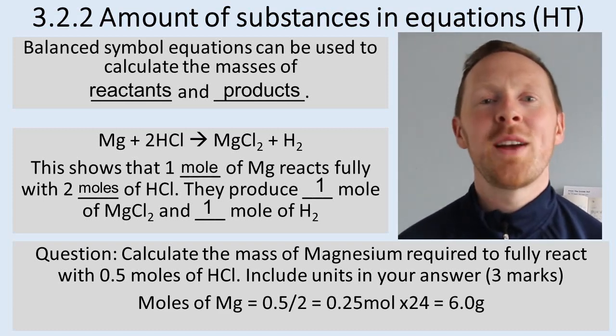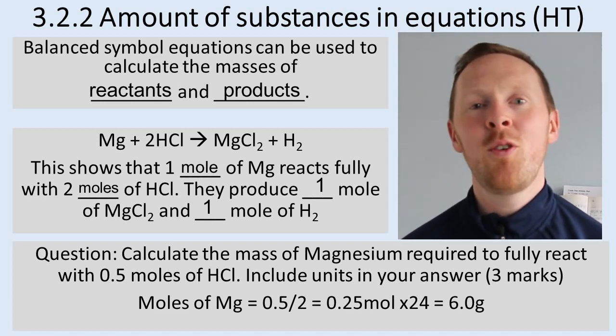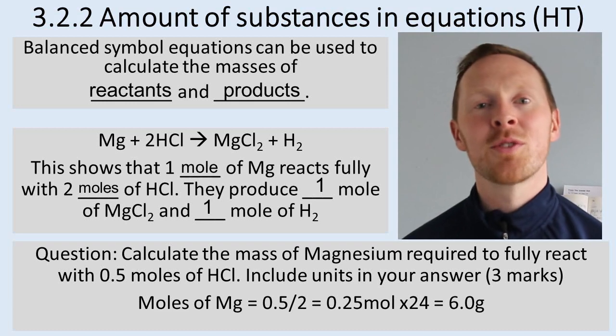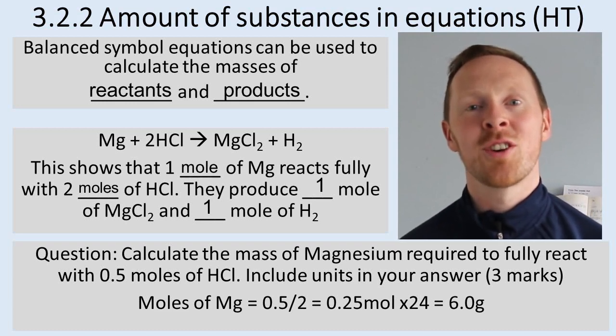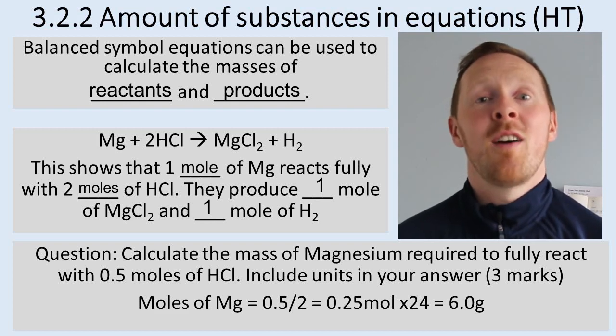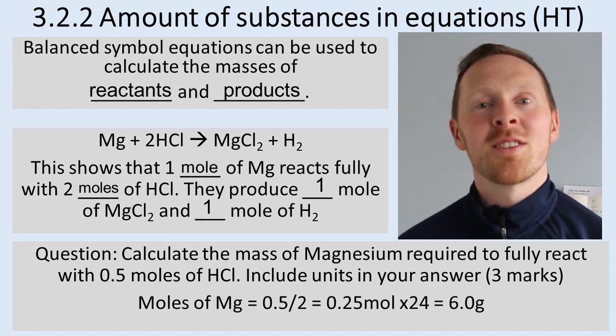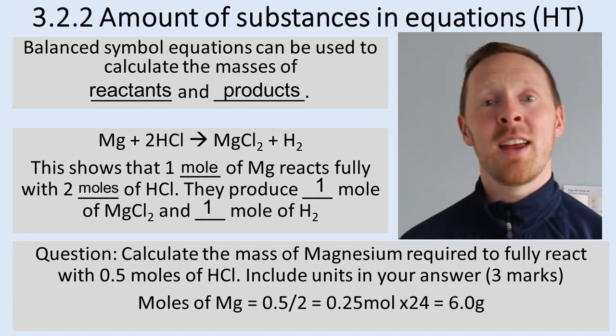Let's look at a question here. How much magnesium would you need to react fully with 0.5 moles of hydrogen chloride, of hydrochloric acid? You know the moles of hydrochloric acid is 0.5. Then you look at the equation and ask how many moles of magnesium you're going to need relatively.